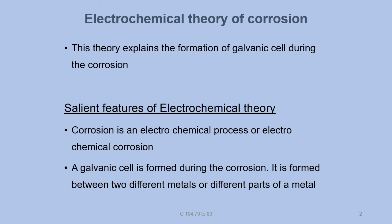In this video lesson, we first discuss the electrochemical theory of corrosion. This theory was introduced by Whitney. This theory explains the formation of a galvanic cell during corrosion. According to this theory, corrosion is an electrochemical process, also called electrochemical corrosion.